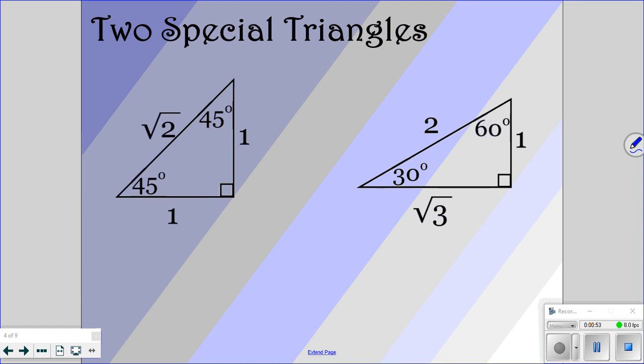If y'all need to pause the video and go over this to write them down, you can. But for a 45-45-90, your side lengths are 1, 1, square root of 2. For a 30-60-90, 1, square root of 3, and 2.